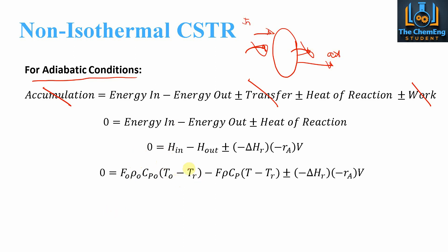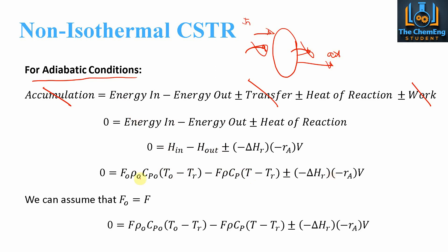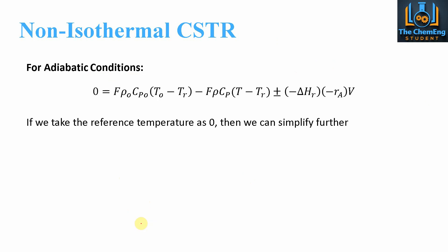We have to account for a reference temperature. We do the same for the outlet terms: F·ρ·Cp·ΔT. Under steady state, F0 equals F. To make life easy, we take the reference temperature as zero, which allows us to eliminate the TR terms, simplifying the system.